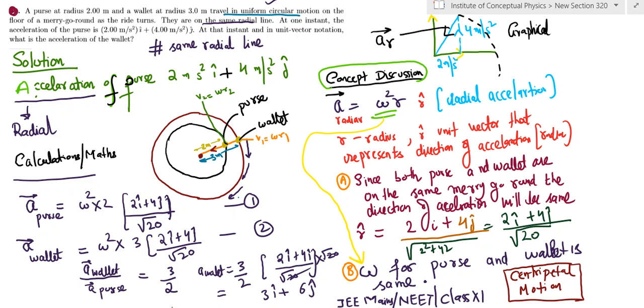The linear velocity is different because the radius is different. It's the angular velocity which is the same, so we will apply ω²r as the correct approach.